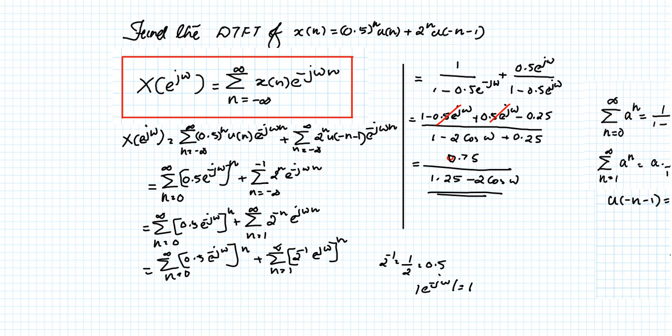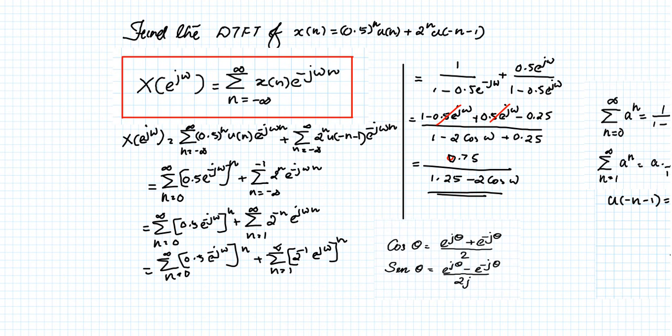The denominator comes from multiplying (1 - 0.5·e^(-jω)) by (1 - 0.5·e^(jω)). By Euler's formula, e^(jθ) + e^(-jθ) = 2cos(θ), so the cross terms combine as -2·(0.5)·cos(ω) = -cos(ω). Therefore, the final answer is X(e^jω) = 0.75 / (1.25 - 2cos(ω)).